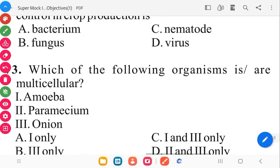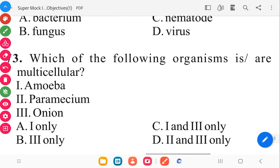Question 73. Which of the following organisms is or are multicellular? Amoeba, paramecium, onion. The answer in 3, 2, 1 is onion plant. All of these are unicellular.